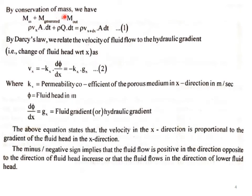By the conservation of mass, M_in plus M_generated equals M_out. So M_in is denoted as rho·Vx·A·dt, plus M_generated denoted as rho·Q·dt, equals M_out which is rho·V(x+dx)·A·dt. This is equation number 1.